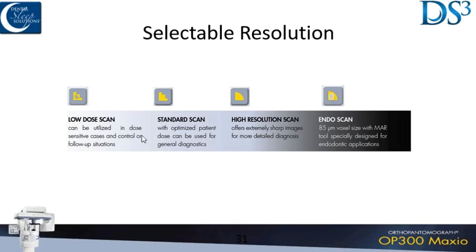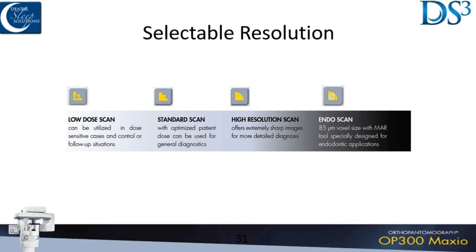This low-dose scan is available and is what we use for most of our patients, because I'm not doing a root canal on these people — I just want to see big structures. The low-dose scan shows me everything I really need to know. You do have the ability to change that for endo or other reasons where you may want a higher dose. Just make sure that you have the resolutions for what you need.